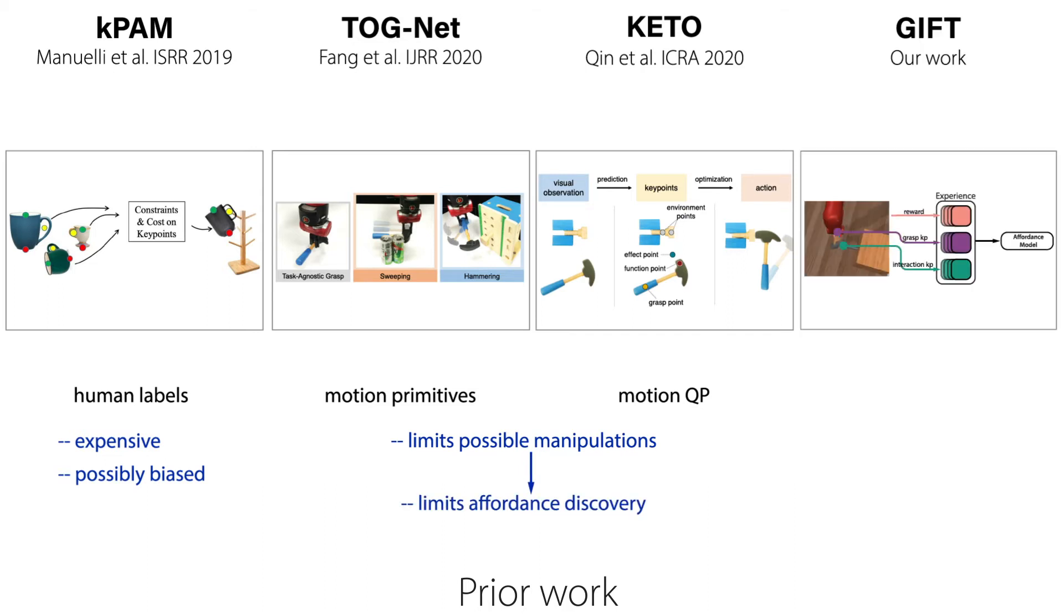In contrast, GIFT does not rely on labels or a constrained action space. We gather experience using a simple sampling-based motion planner, which is conditioned on a choice of key points through a reward function that encodes task success and encourages use of the chosen points. The planner samples actions from the full action space. It is free to use tools in unexpected ways, discovering new affordances that could not have been explored with a more constrained approach. Since we do not rely on human labels or predefined motion primitives, we avoid incorporating human bias. Our representation emerges only from the constraints of the task.